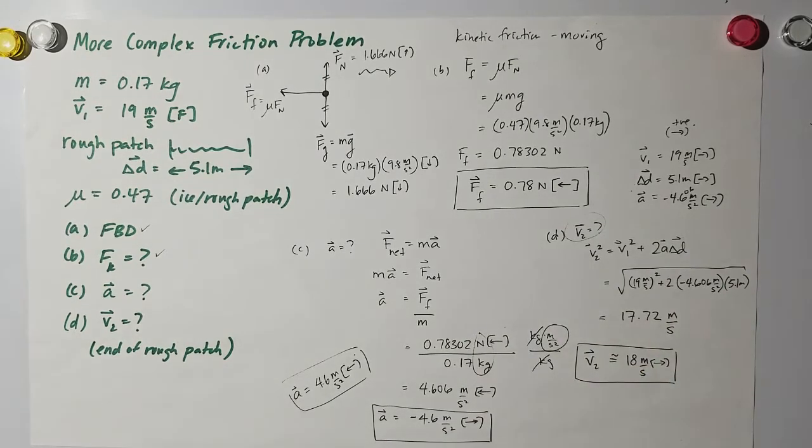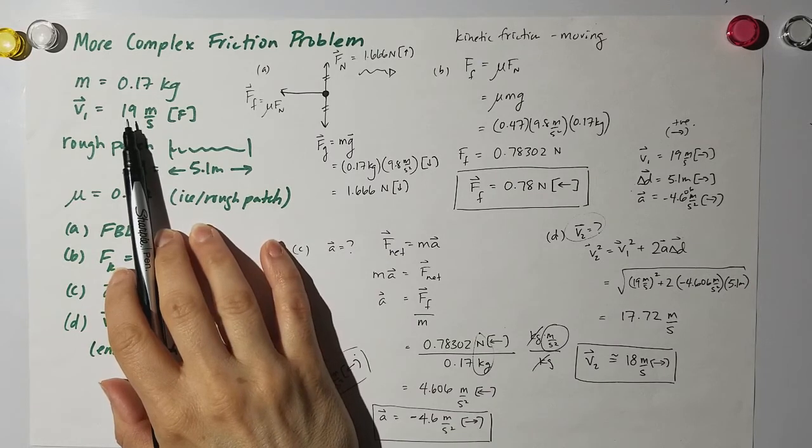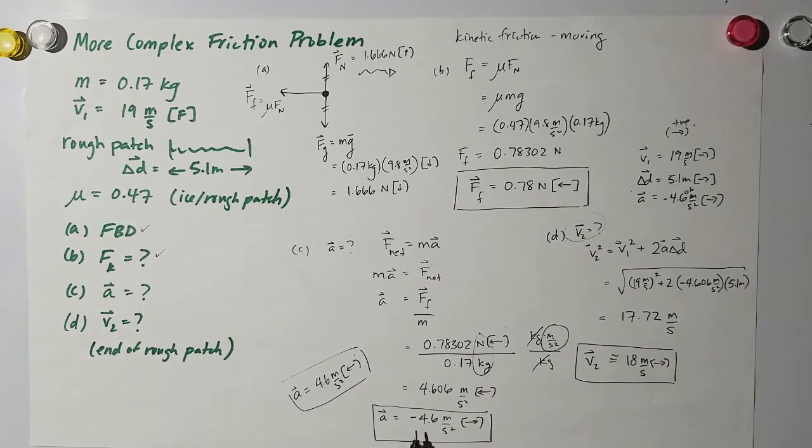Now, does my answer make sense? Well, let's take a look. The initial velocity was 19. I found out the acceleration was a negative value, which means my velocity after the rough patch should be less. And it is, it's not a whole bunch less, but it's one meter per second less. So pause here, go over that, and then ask me any questions.